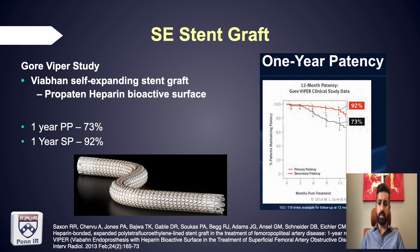There is also data for self-expanding stent grafts in the FEMPOP segments. The Viabahn has a proprietary heparin bioactive surface to fight early thrombosis. The VIPER studies show 73% primary patency, which is subpar compared to the newer drug-eluting stents. Being a stent graft, it does sacrifice collaterals along the path. It can be utilized in patients with repetitive short-term in-stent restenosis, re-thrombosis, re-lining fractured stents, certain aneurysms, and occasionally in ruptures.